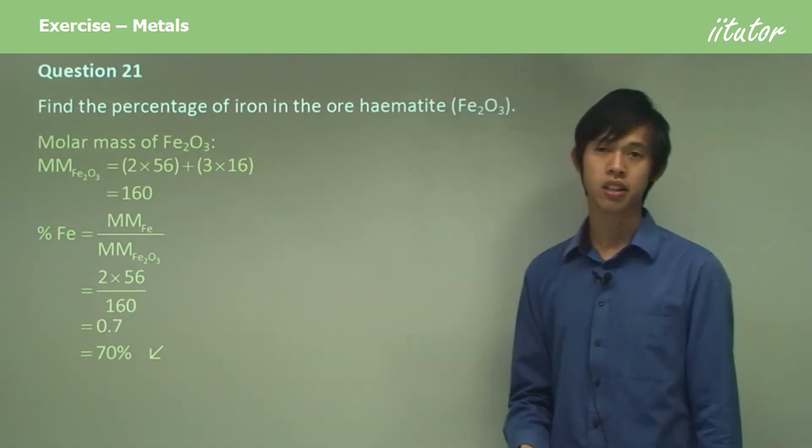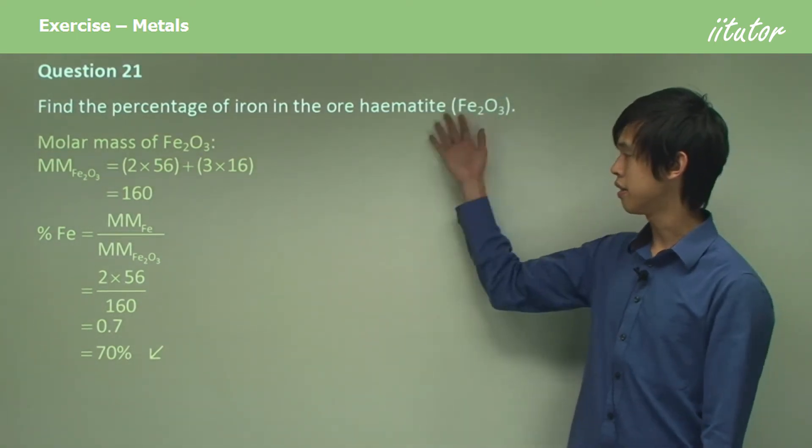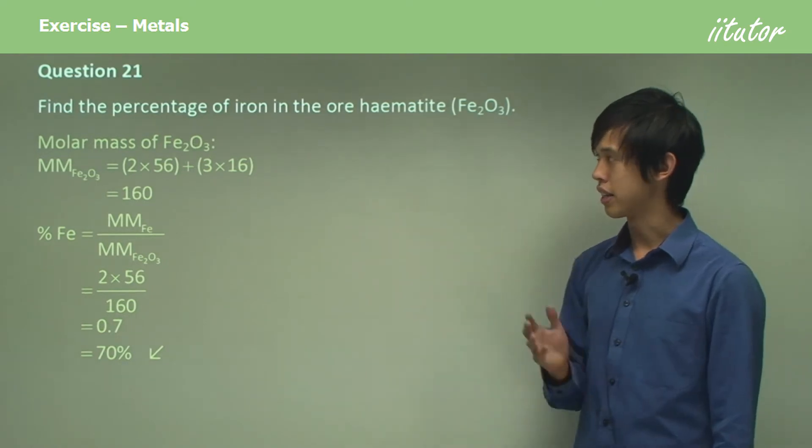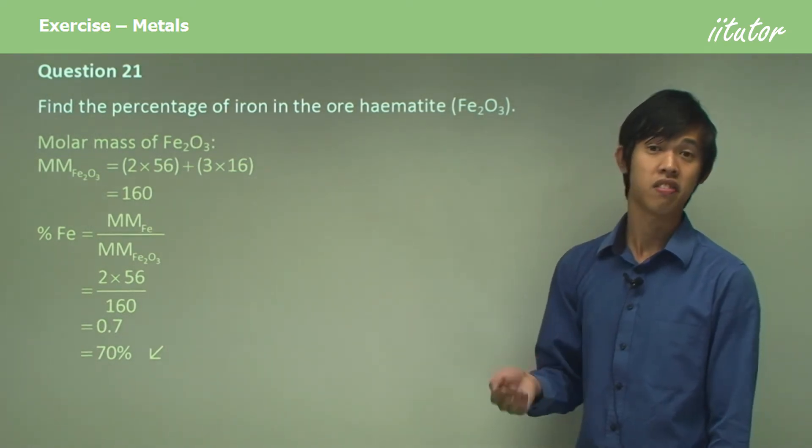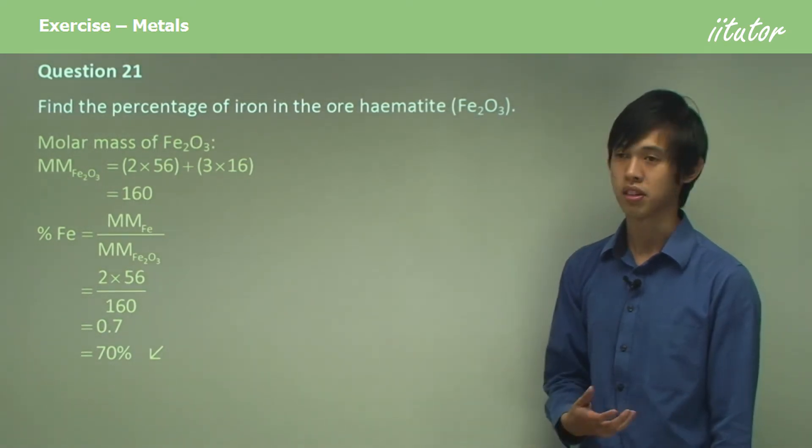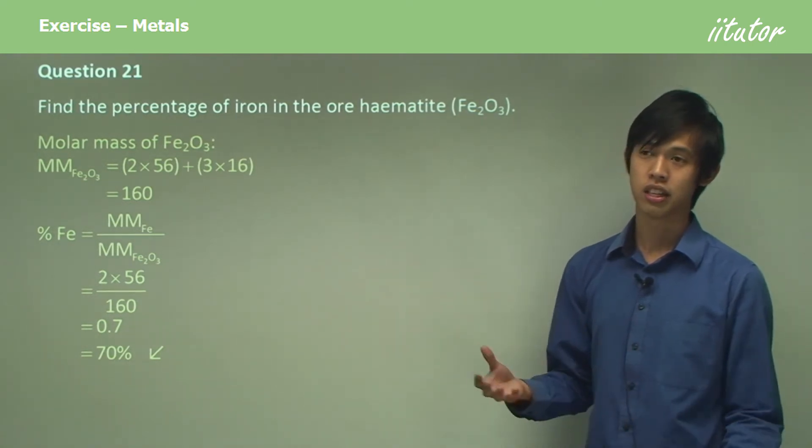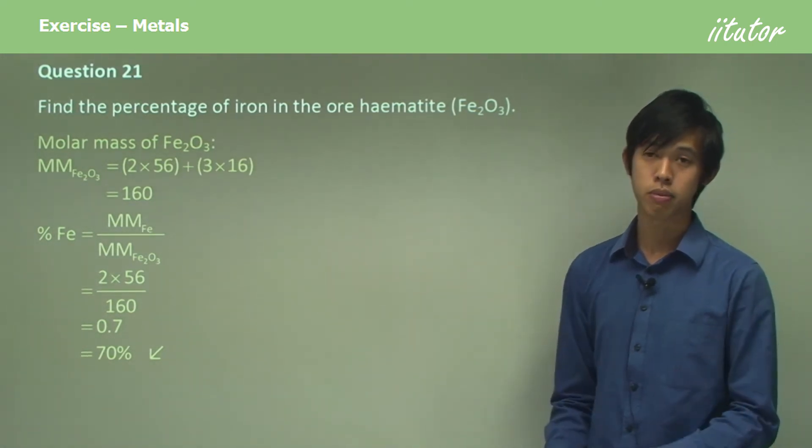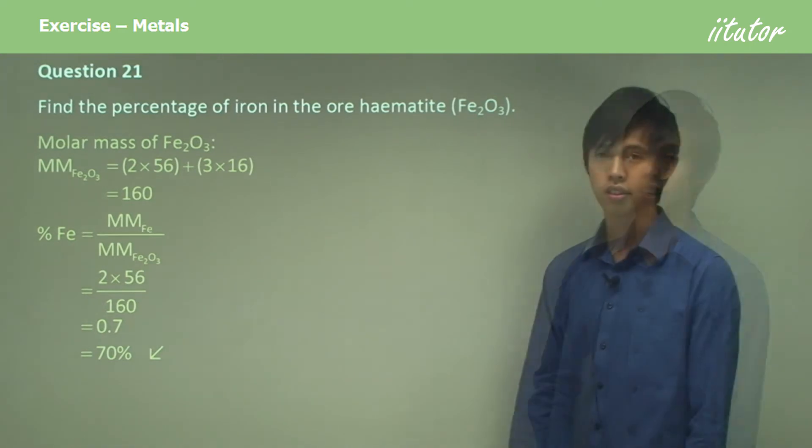So in hematite, this ore, the percentage of iron is 70%, which is pretty good. So if you had a big deposit of hematite, you'd be looking at a lot of iron in your deposit.